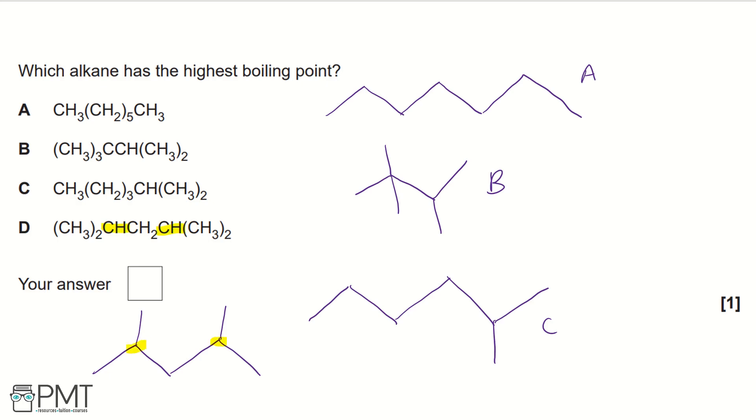Now we're asked for the highest boiling point, so that's going to be the alkane with the fewest number of branched chains. And the alkane with the fewest number of branched chains is A. So we write A in the answer box provided. To get the mark for this question, you must write A in the box.